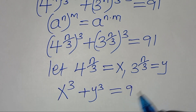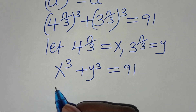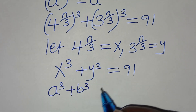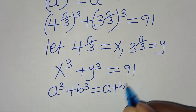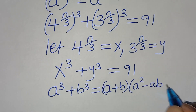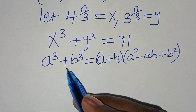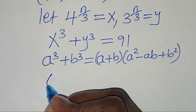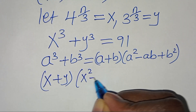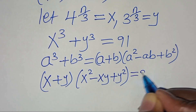x cubed plus y cubed is the sum of two cubes, which can be expressed using the identity a cubed plus b cubed equals (a + b)(a squared minus ab plus b squared). Applying this identity, we have (x + y)(x squared minus xy plus y squared) equals 91.